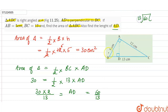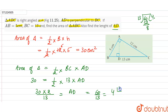Dividing 60 by 13: 13 into 4 is 52, and the remainder is 8. So we can write this as the mixed fraction 4 and 8/13. Therefore AD equals 4 and 8/13 centimeters, which is the required answer.